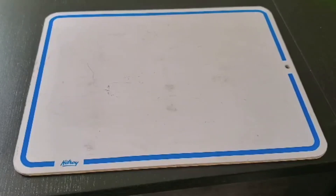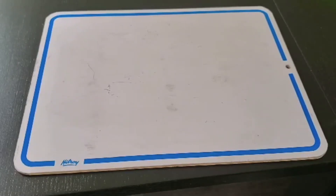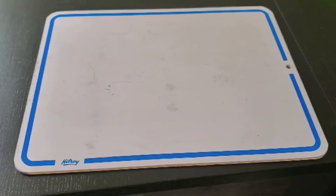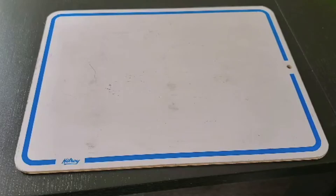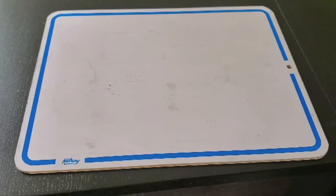Okay, this week in math we're going to start a new unit called Shapes and Space. To get started, the first thing we have to learn about are different types of lines. I'm going to go through the different types of lines and then you can complete Jump Math pages 70 and 71 in your Jump Math 2.1 book.